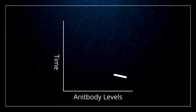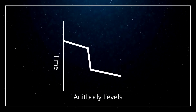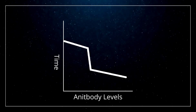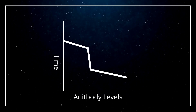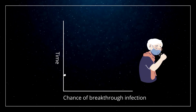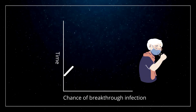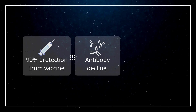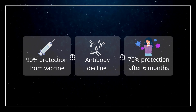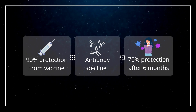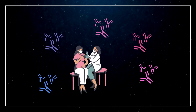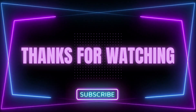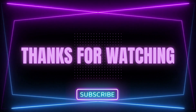Why should we get booster shots? A study by Davin Port and colleagues estimated that COVID immunity attained by vaccination will lose half of its effectiveness in 108 days, as antibody levels against COVID-19 decline steadily over time, increasing the risk of breakthrough infection. For example, a vaccine that provides 90% immunity will only provide 70% protection after six or seven months. By getting booster shots, you will regain your antibodies and decrease the risk of contracting COVID-19.